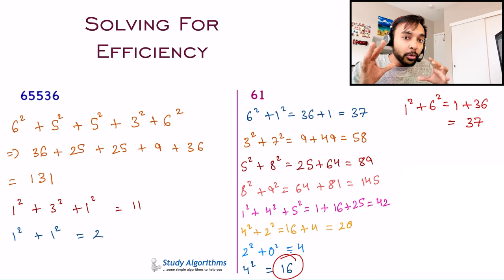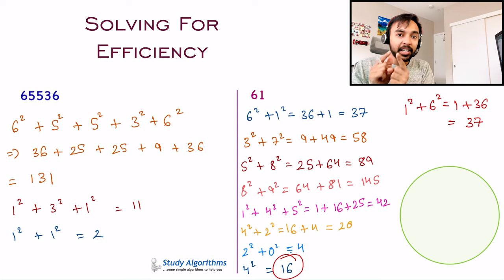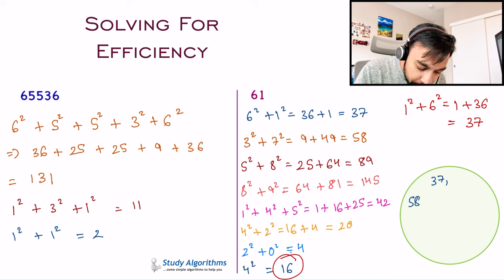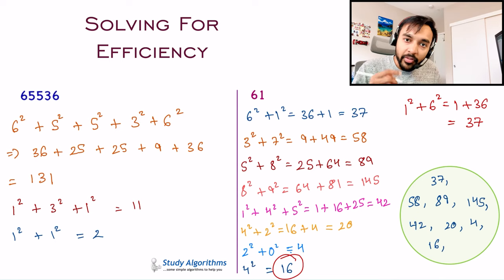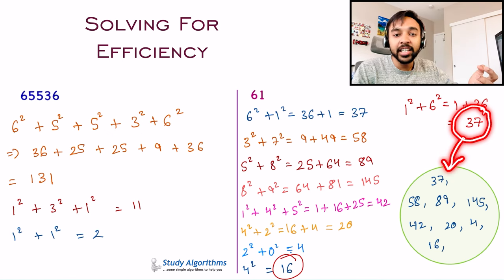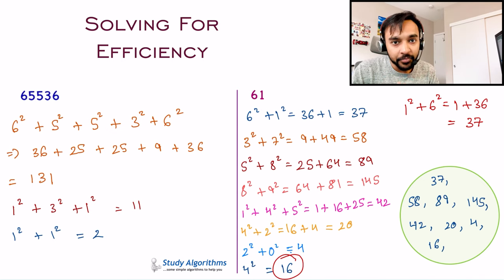That is when you need to take the help of a hash set. A hash set can determine if you have encountered a number already. If we do the same calculation with a hash set, we start with 37 and put it in the hash set. Next we get 58, so we put 58 in the hash set. Then we get 89, and so on — just keep adding all numbers to the hash set. Now when you encounter 37 again, check your hash set. If the number is already in the hash set, that means you have already calculated for it and did not get a 1, so you break out of the loop. This achieves your answer in a very efficient manner. If you have understood all of this, let us look at the dry run of the code.